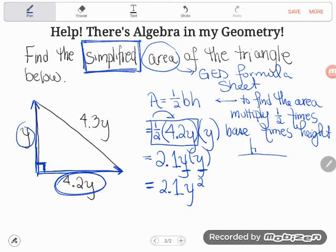Now, you might be thinking, what do I do now? What am I supposed to do with that y? Well, there's nothing you can do with this y. You don't have enough information to solve this to figure out what y is equal to. All you could do was simplify. This is the simplified area of the triangle below. It's 2.1y² square units.